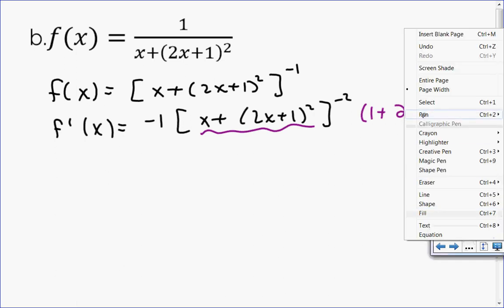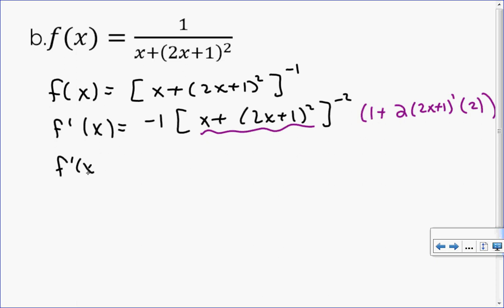So now we're going to just tidy all this up. f prime of x is negative 1 times, again, I'm going to simplify this inside part. So I have expanding my binomial, 4x squared plus 4x plus 1. And I'll do the same thing here. So 2 times 2 is 4. That's what I will distribute in. I almost forgot my exponent again. There we go, negative 2. So here I'm going to have 1 plus 4 times 2x and 4 times 1.